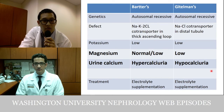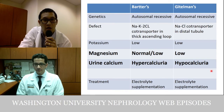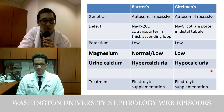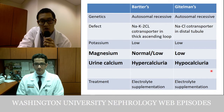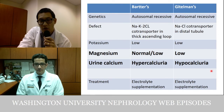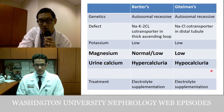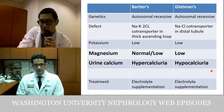Bartter's is like being on a loop diuretic; Gitelman's like being on a thiazide. Both are rare autosomal recessive conditions. The defect is in the NKCC2 cotransporter in the thick ascending loop for Bartter's, and the sodium-chloride cotransporter in the distal tubule for Gitelman's. Both can lead to low magnesium and thus a high fractional excretion of magnesium, but urine calcium is elevated in Bartter's and low in Gitelman's — the key differentiating factor.